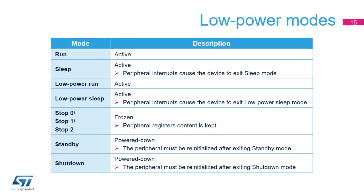The FSMC is active in Run, Sleep, Low Power Run, and Low Power Sleep modes. An FSMC interrupt can cause the device to exit Sleep or Low Power Sleep mode. In Stop 0, Stop 1, and Stop 2 modes, the FSMC is frozen and the content of its registers is kept. In Standby or Shutdown mode, the FSMC is powered down and must be re-initialized afterwards.